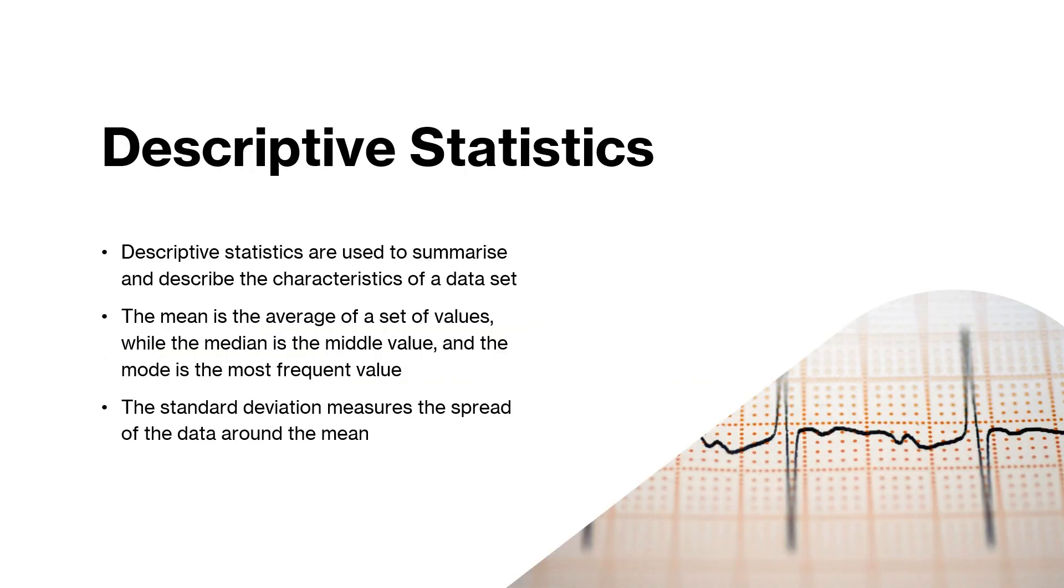Descriptive statistics are used to summarize and describe the characteristics of a data set. The mean is the average of a set of values, while the median is the middle value and the mode is the most frequent value. The standard deviation measures the spread of the data around the mean.